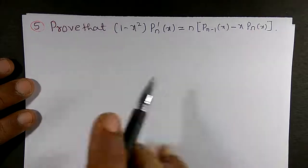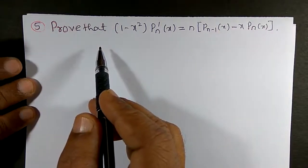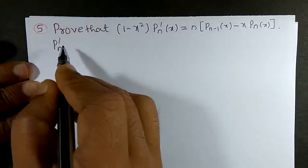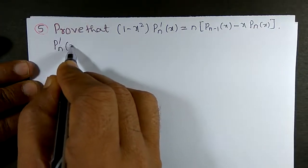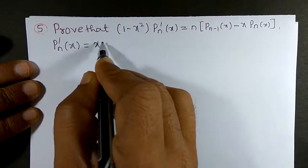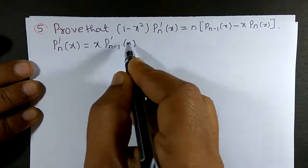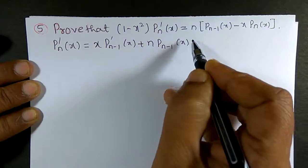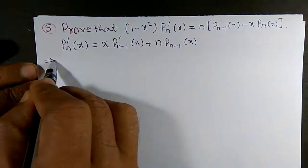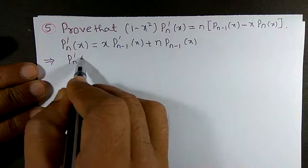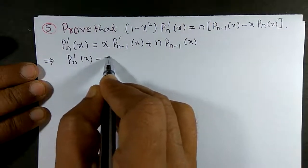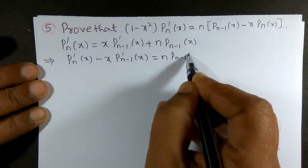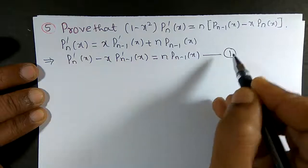I can prove this recurrence relation with the help of a previous recurrence relation. I am going to use the fourth recurrence relation. The fourth recurrence relation we have proved is: P'ₙ(x) = x · P'ₙ₋₁(x) + n · Pₙ₋₁(x). I will call this Equation 1.